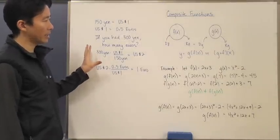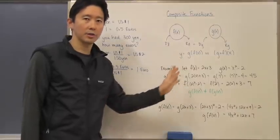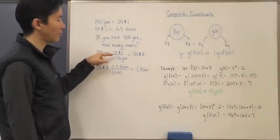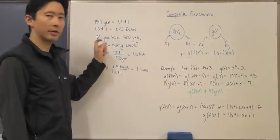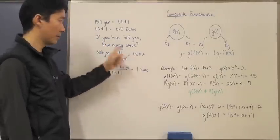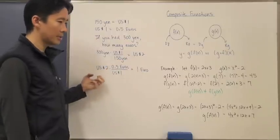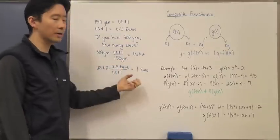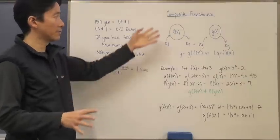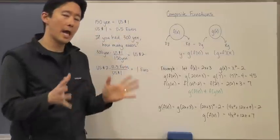Now let's see how this example actually relates to what composite functions are. Notice I actually did two things: I started off with yen, I put it into a function or I converted it so that I came out with dollars, and then I took the dollars and put it into another conversion factor to come up with euros.